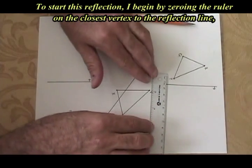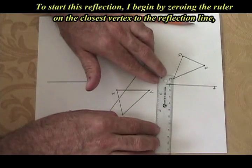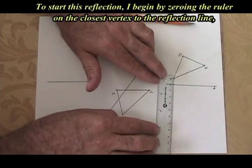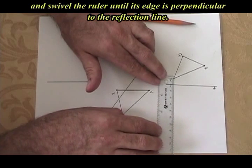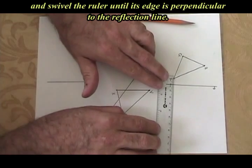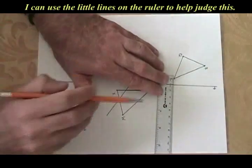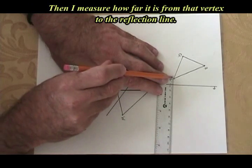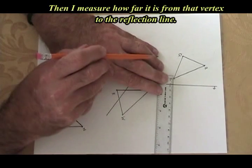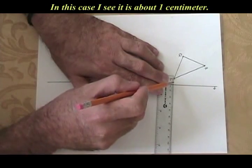To start doing this reflection, I start by zeroing the ruler on the closest vertex to the reflection line. And then I swivel the ruler until the edge of the ruler is perpendicular to the reflection line. I can use little lines on the ruler to help judge this. And then I see how far it is between that vertex and the reflection line. In this case, I think it is about one centimeter.